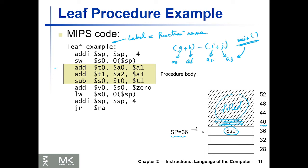We're going to calculate g plus h, which is a0 plus a1, and store that in t0. Then add i plus j, which is a2 plus a3, and store that in t1. Then subtract them and the subtraction result is in S0. This is the subtraction instruction that we explored before.